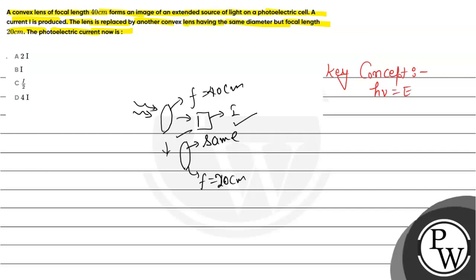With the same diameter, when we have light incident, we have the same portion. The intensity of the image in this case will remain the same. In both cases, the intensity is the same.